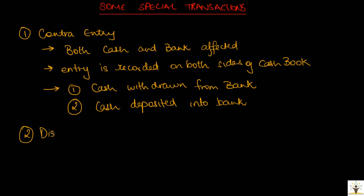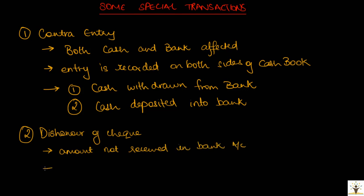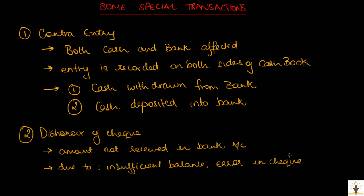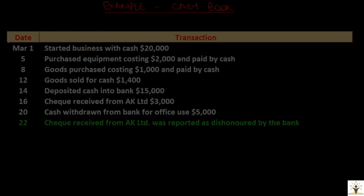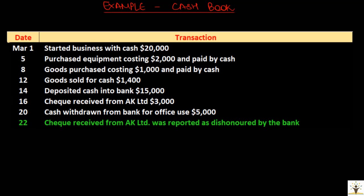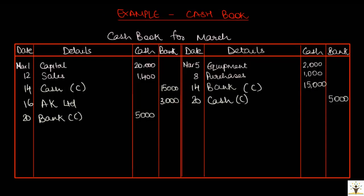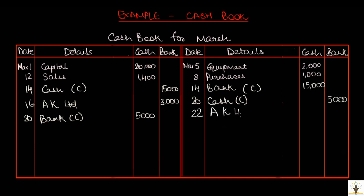The second special transaction is the dishonor of check. Dishonor of check is a situation in which the bank refuses to deposit the amount of the check in the depositor's bank account. Possible reasons could be insufficient balance in the payer's account or an error in writing the check. On March 22, the check received from AK Limited was reported as dishonored by bank. When the check gets dishonored, an exact opposite entry will be made on the credit side of the bank column.